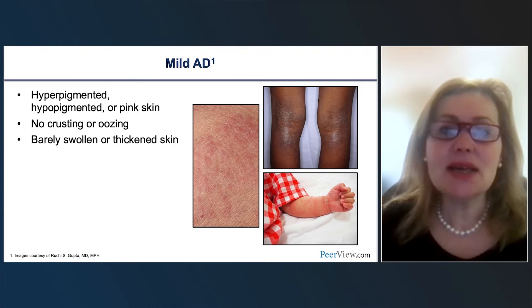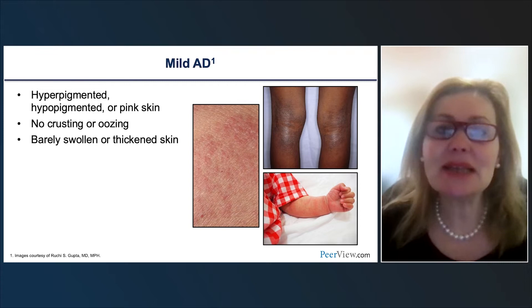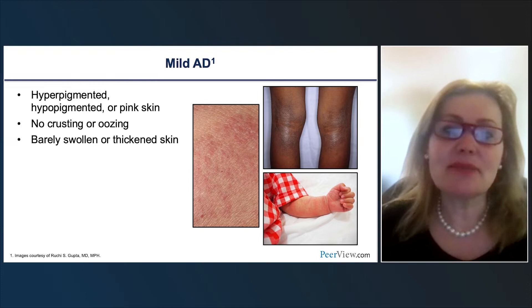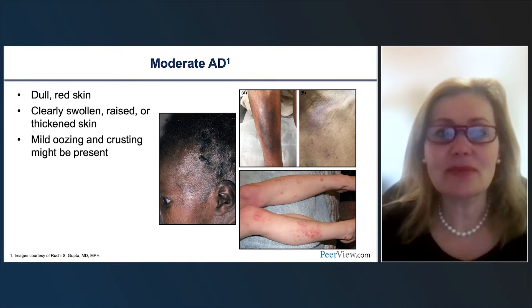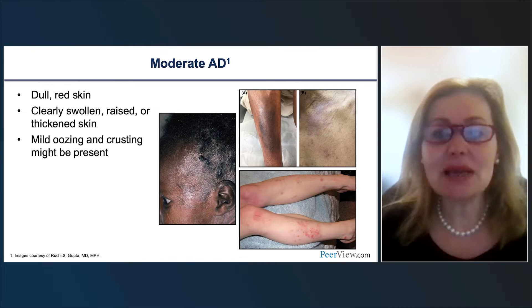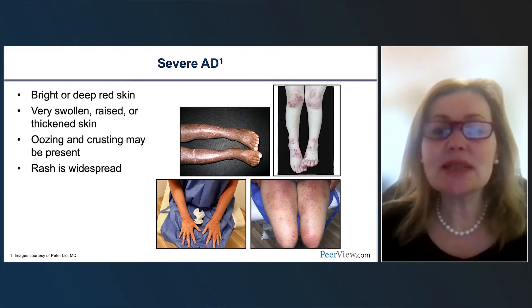In mild or localized AD, body surface area is important. Depending on the skin tone, you see hyperpigmented, hypopigmented, or pinkish erythematous skin, with no crusting or oozing and barely swollen or thickened skin. In moderate atopic dermatitis, there is more dull red skin, clearly swollen or raised or thickened skin, with mild oozing and crusting that might be present. In severe atopic dermatitis, there is bright or deep red skin, very swollen or raised or thickened skin, and oozing and crusting may be present. Body surface area comes into play because the rash is often widespread.